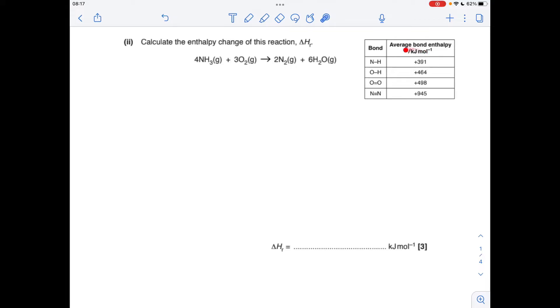Next part, we've got to use these average bond enthalpies to calculate the enthalpy change for this reaction. So I call this an in minus out calculation. We're going to work out the amount of energy needed to break the bonds in the reactants - that's my energy in. And then we're going to get energy out when we make these bonds in the products. The delta H is the in minus the out.